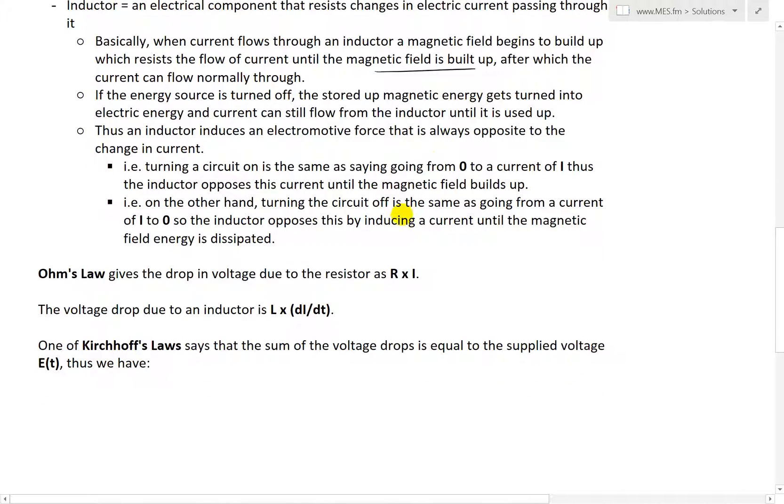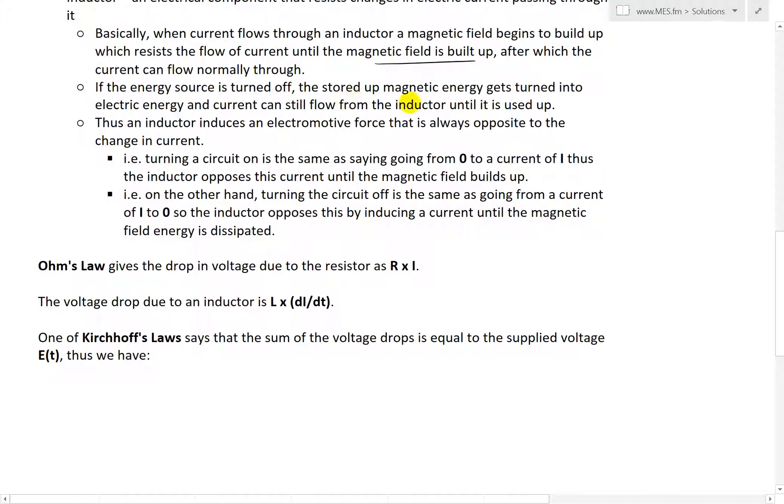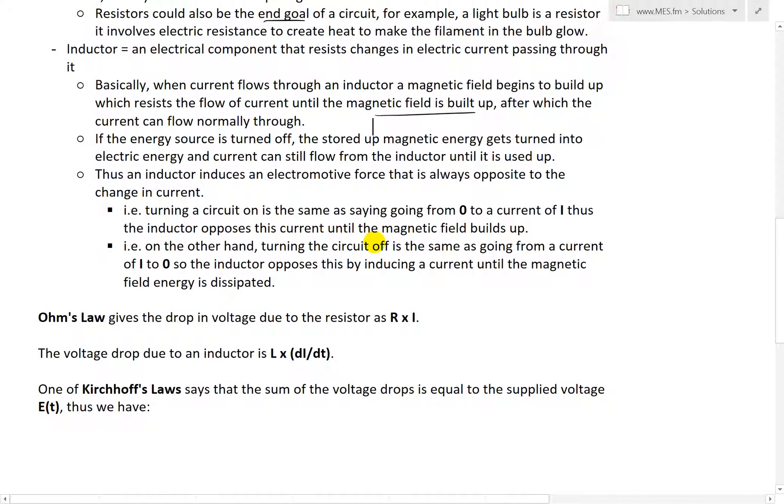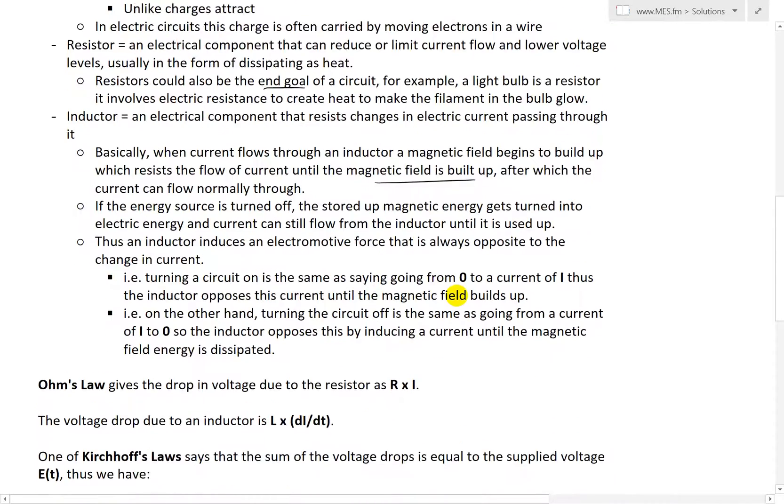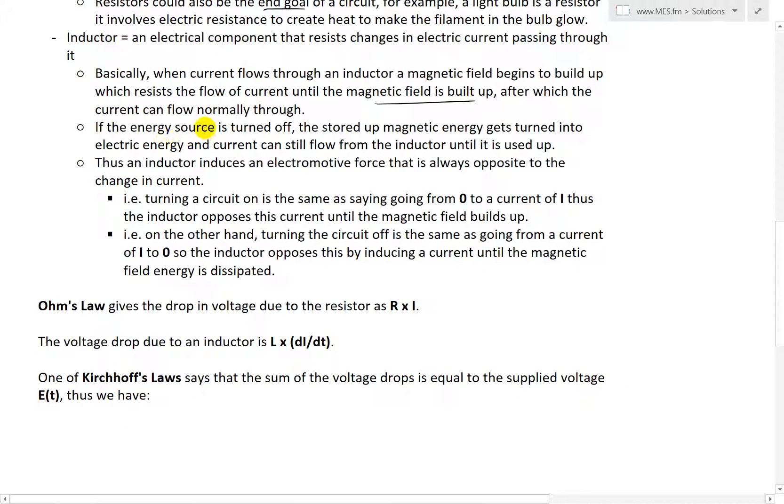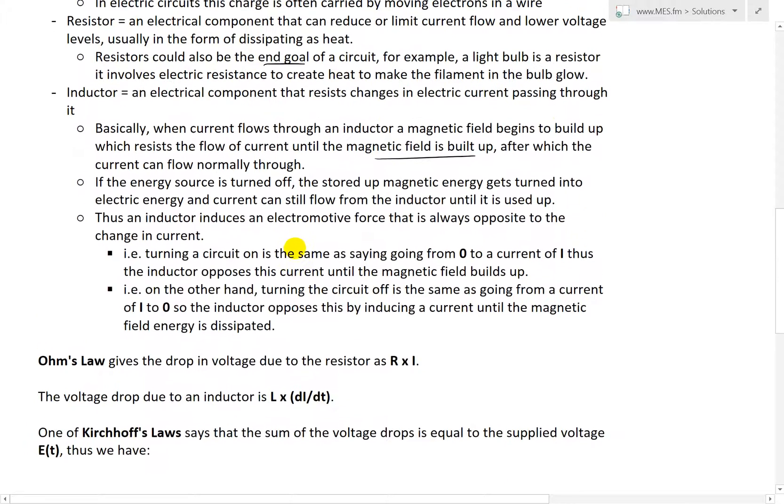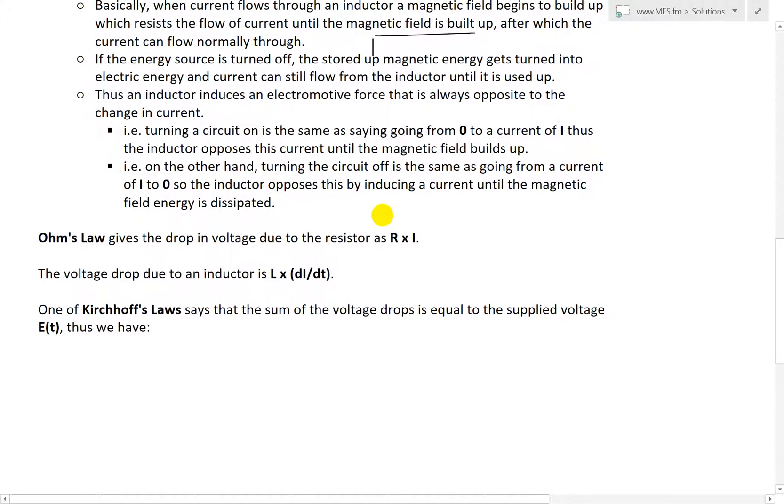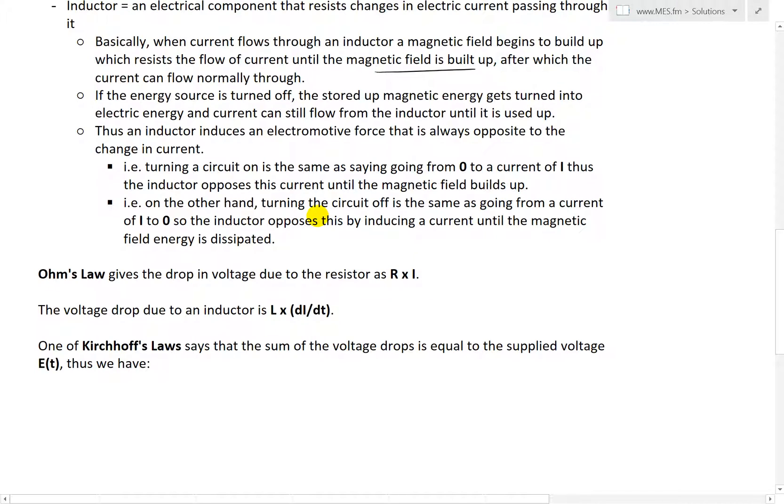Once the field is built up, then it goes through. And if the energy source is turned off, the stored up magnetic energy gets turned into electrical energy and current can still flow from the inductor until it is used up. So it's kind of like a storage of energy, because even if you turn off the energy source, there is still some magnetic energy which gets transformed to electrical energy. Thus, an inductor induces an electromotive force that is always opposite to the change in current.